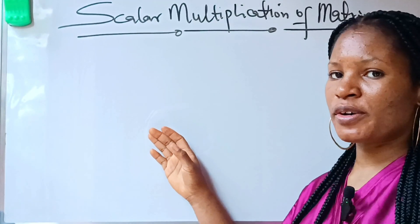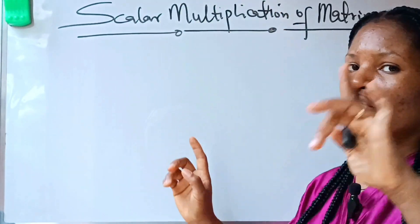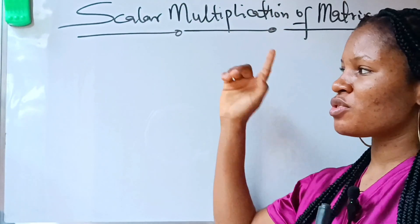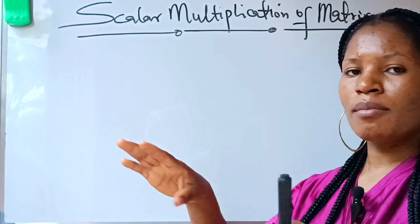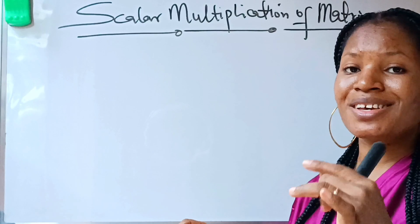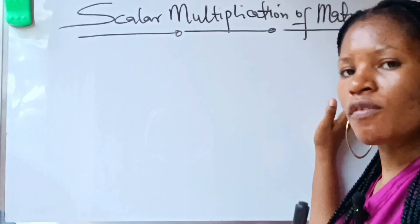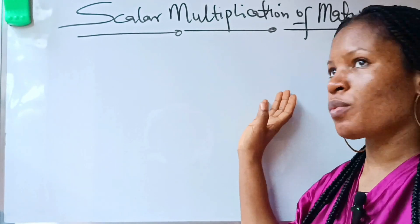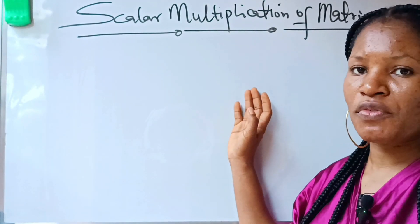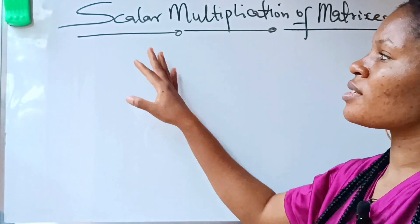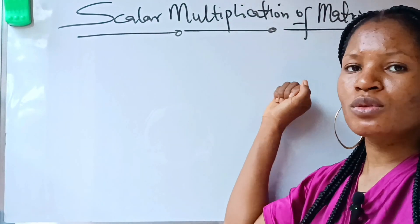This is a continuation of my previous video on introduction to matrices. If you missed that video, I advise you check my page for it — the topic is introduction to matrices. This is still under introduction but it's going to be a little bit more advanced than the previous one. So let's get into it: scalar multiplication of matrices — how do we do this?